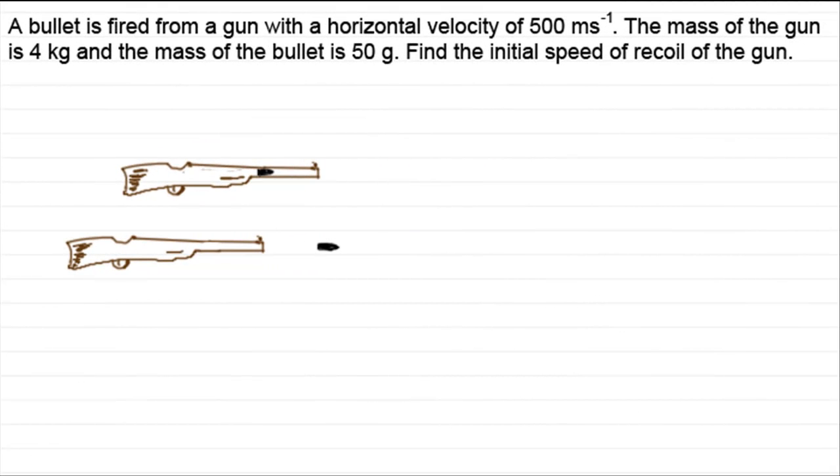Hi, welcome to another example in my series on conservation of momentum. In this example, we've got a bullet inside a gun and it's fired with a horizontal velocity of 500 meters per second. The mass of the gun is 4 kilograms and the mass of the bullet is 50 grams. What we've got to do is find the initial speed of recoil of the gun.